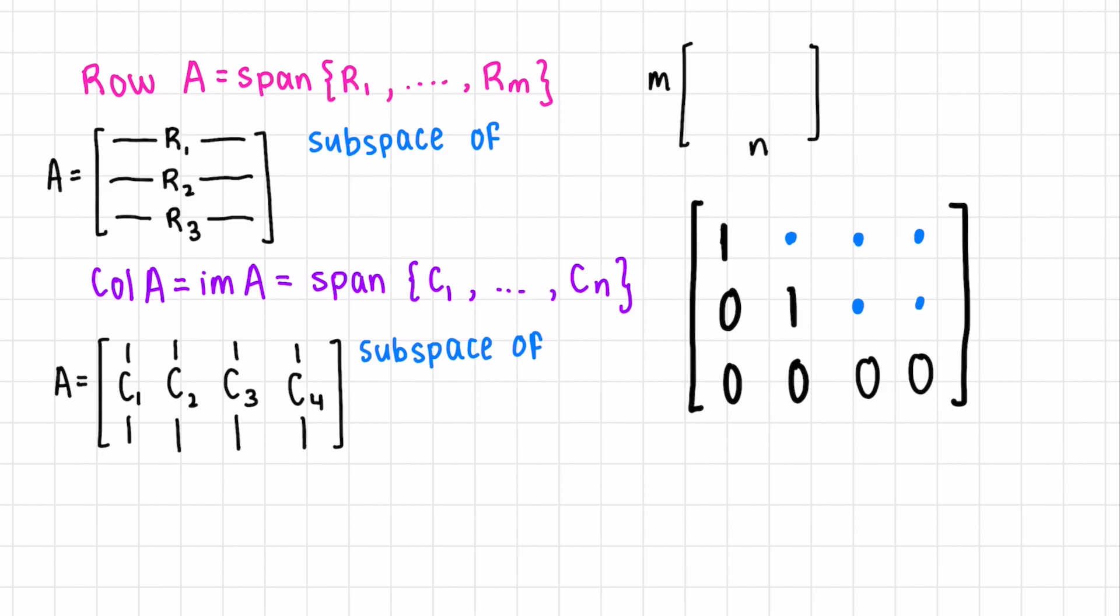The row space is the span of each of the rows of the matrix. Let's call our matrix A. If we say A is M by N, that means it has M rows, N columns.